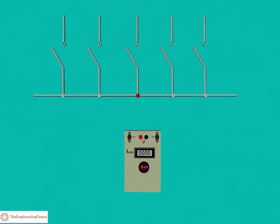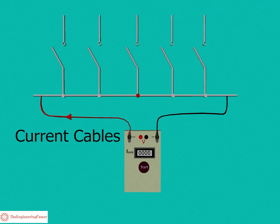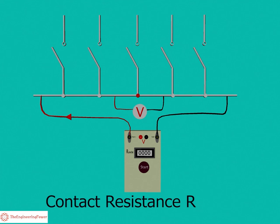We inject current into the bus bar through the current cables of the testing set. After that, we will connect external voltmeter across this specific joint and measure the voltage drop across the joint. Then we will calculate the contact resistance R using Ohm's law, that is R equals V by I.